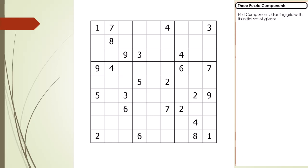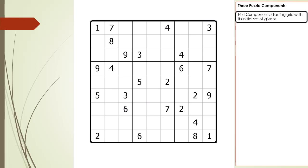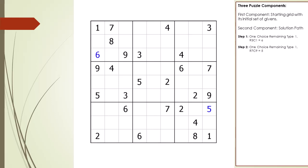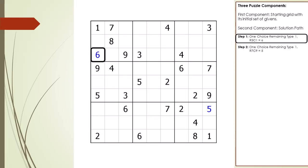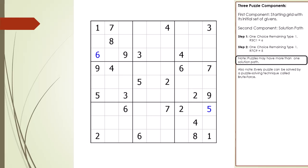Every Sudoku puzzle is composed of three puzzle components. The first is the initial grid with its starting set of givens. The second is the solution path, which is composed of steps where each step is a puzzle solving technique. Each puzzle may have more than one solution path, and different people may use different puzzle solving techniques for solving the same puzzle.